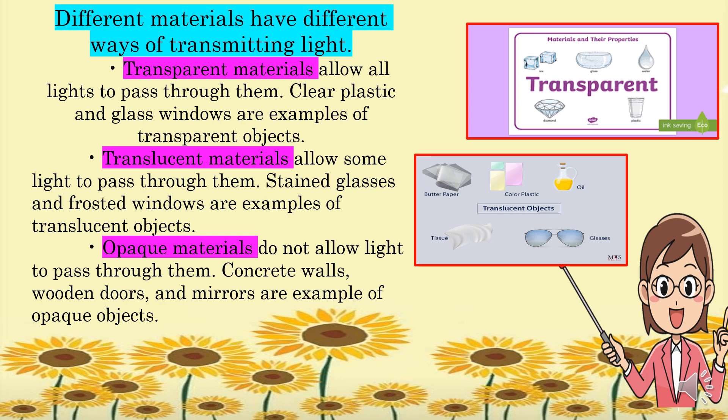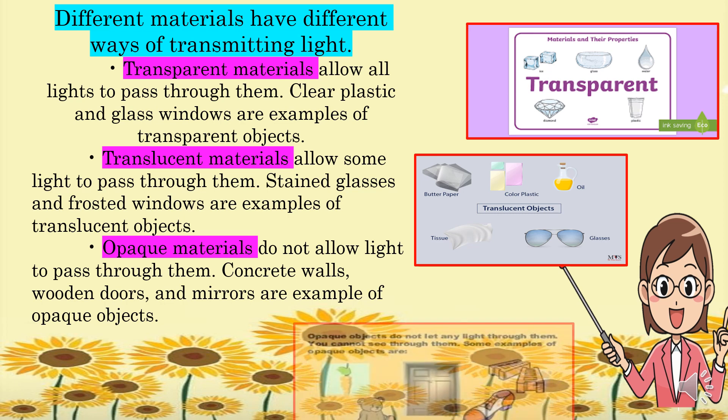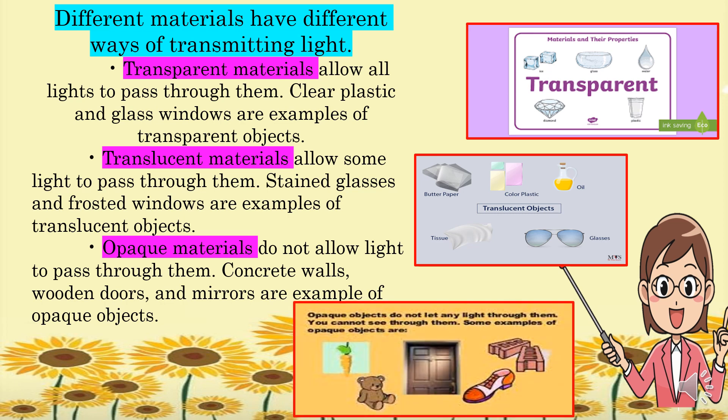And the last one, we have opaque materials. Opaque materials do not allow light to pass through them. Concrete walls, wooden doors, and mirrors are examples of opaque objects.